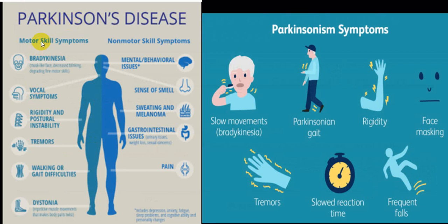Motor symptoms include bradykinesia, speech disturbances, postural instability, tremors, gait disturbances, and hypertonia. Non-motor symptoms include behavior problems, mental disturbances, impaired sense of smell, sweating disturbances, gastrointestinal symptoms like constipation, and painful symptoms. Classical symptoms of Parkinsonism include slow movement, bradykinesia or akinesia, typical shuffling gait, cogwheel rigidity, mask-like face, resting tremors, slow reaction time, and frequent falls. When a person does not respond to levodopa, they are labeled Parkinsonism rather than Parkinson's disease.